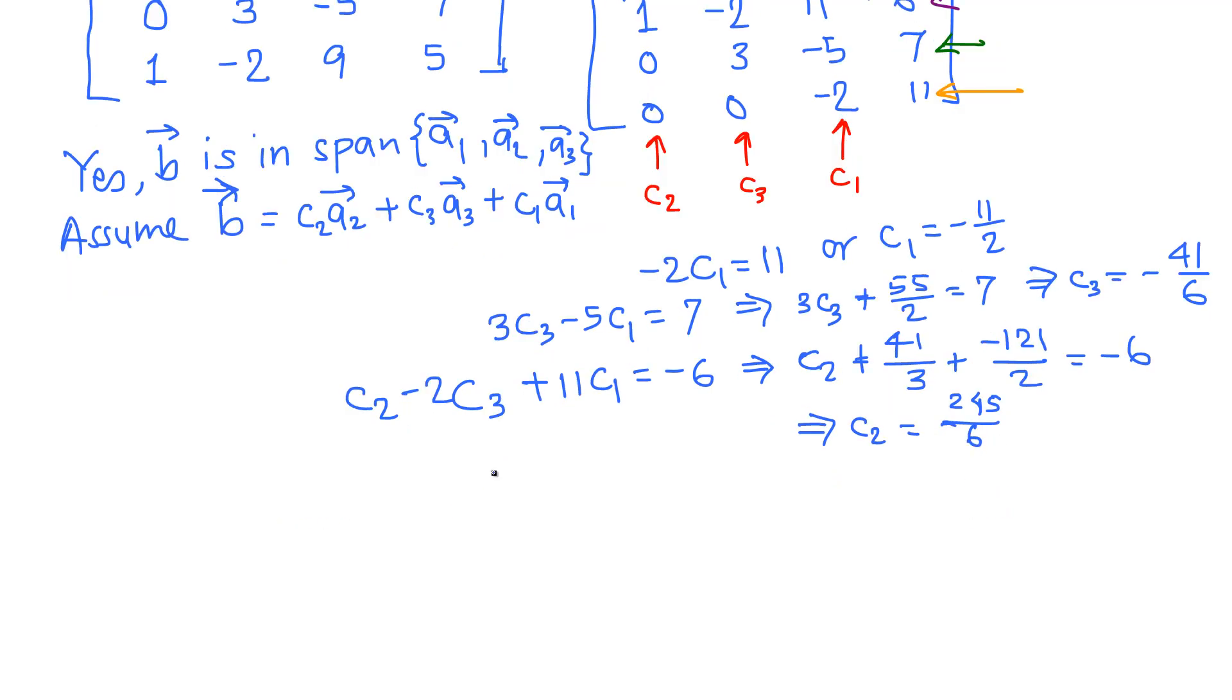Thus the vector B, that is [-6, 7, 5], is equal to c1*a1. Now we can write in correct order. c1*a1, c1 is found to be -11/2.